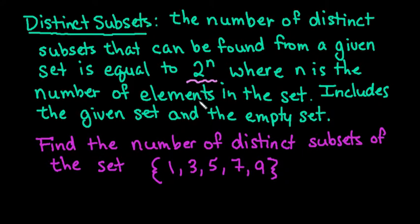The number of distinct subsets that can be found from a given set is equal to 2 to the nth power, where n is the number of elements in the set.